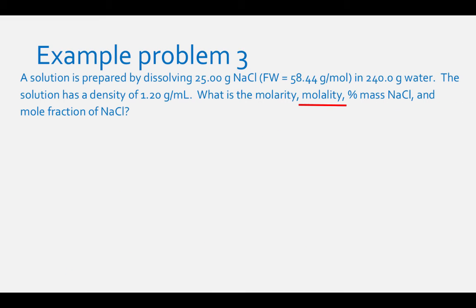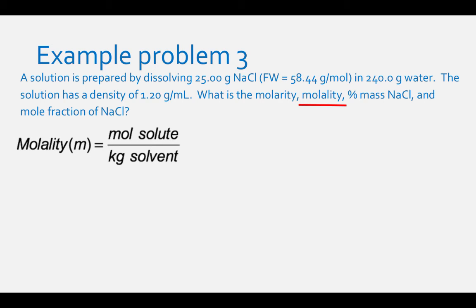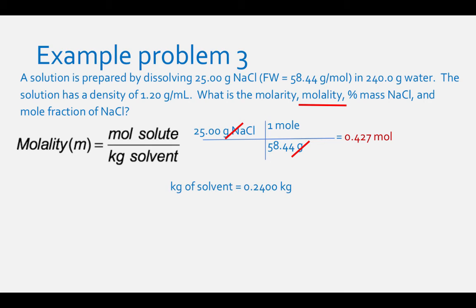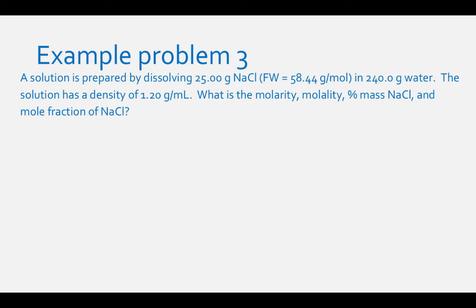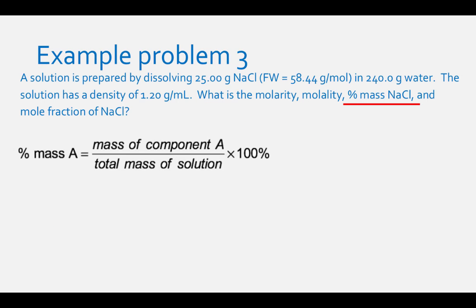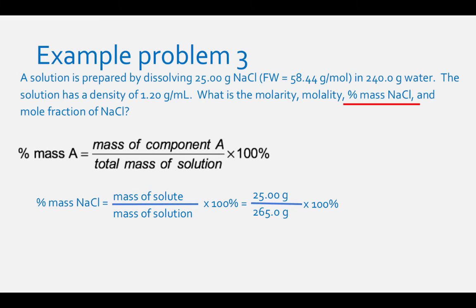To find molality, divide moles of solute by kilograms of solvent. Moles of solute is 0.427. The kilograms of solvent is 0.2400 kg (from 240.0 g of solvent). 0.427 mol ÷ 0.2400 kg = 1.78 molal. To find percent mass of NaCl, divide mass of solute by mass of solution times 100%: 25.00 g ÷ 265.0 g × 100% = 9.43%.